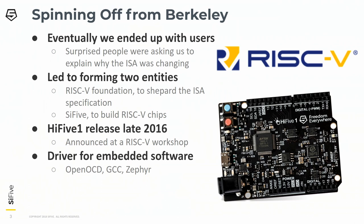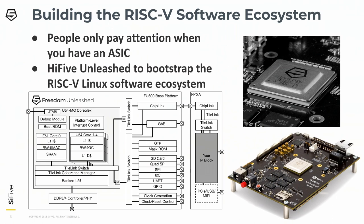So we decided to spin off the RISC-V Foundation and SiFive. The RISC-V Foundation runs these events and owns and shepherds the RISC-V ISA specifications. SiFive is a commercial entity that builds chips. We released a chip called the HiFive1, our main driver for embedded software development. A few years later we came out with a Linux-capable core — about a year and a half ago — and that really kicked off the software development around RISC-V.